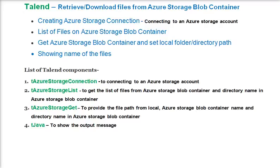First we are going to create an Azure storage connection, then use the list of files on Azure Storage Blob container by providing the name of the container and folder, then use the Azure Storage Get component and set the local path or directory where you want to download the files. We will also show the name of the file being downloaded. These are the components we are going to use: Azure Storage Connection, Azure Storage List, Storage Get, and a tJava component to show messages.